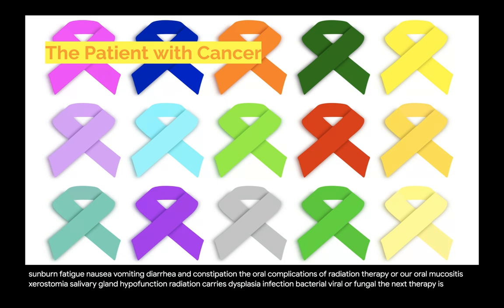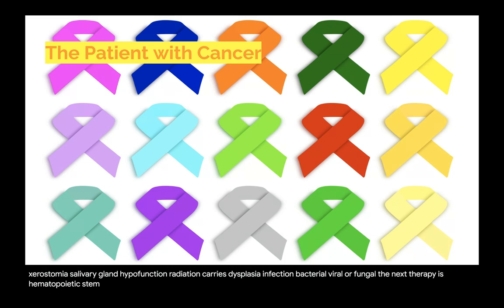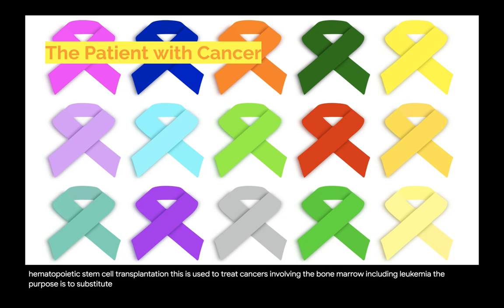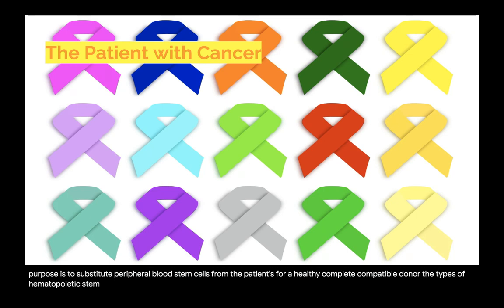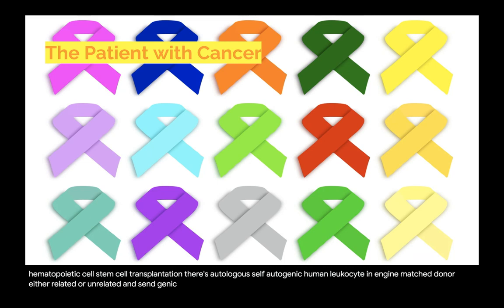Hematopoietic stem cell transplantation is used to treat cancers involving the bone marrow, including leukemia. The purpose is to substitute peripheral blood stem cells from the patient's or a healthy, compatible donor. Types include autologous (self), allogeneic with a human leukocyte antigen-matched donor either related or unrelated, and syngeneic from an identical twin.